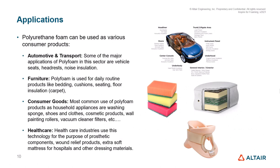Now let us understand the different kinds of applications for polyurethane. The various applications of PU foam are in the domain of automotive, furniture, healthcare, and consumer goods. In the automotive and transport sector, PU foams are generally used as vehicle seats, headrests, and noise insulation.